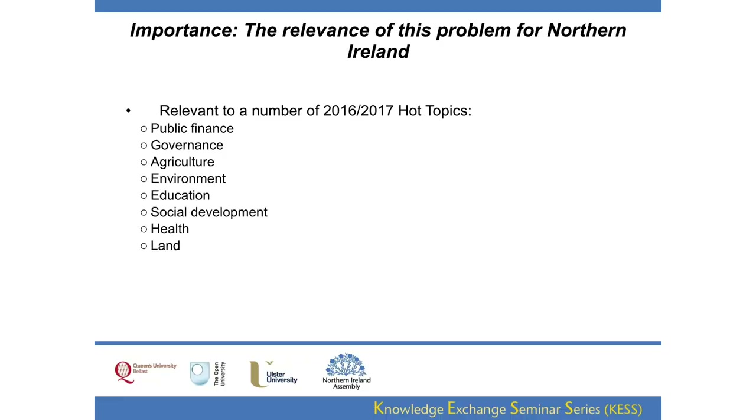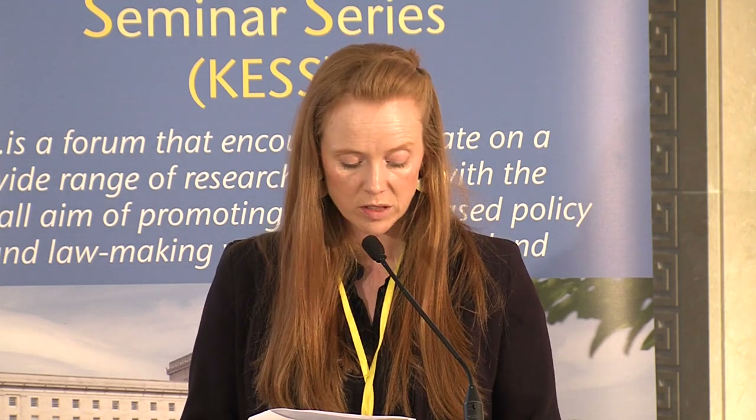A number of issues identified as hot topics for assembly business in the 2016–2017 list are most certainly connected to food and nutrition insecurity: under public finance, the impact of budget cuts on well-being; effectiveness of social and community clauses for public procurement; under governance, public sector reform models promoting sustainability, health, social care, and the environment; under agriculture, sustainability of farm incomes; under the environment, pollution, climate change and waste management; under social development, welfare reform; and under health, health inequalities, mental health, and obesity. All of this is connected to food and nutrition insecurity and food poverty.